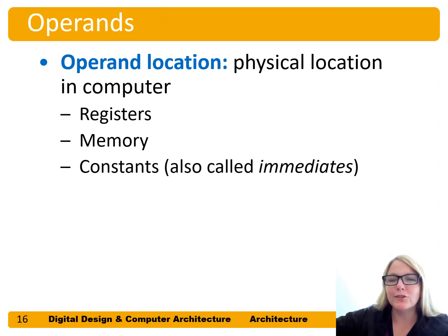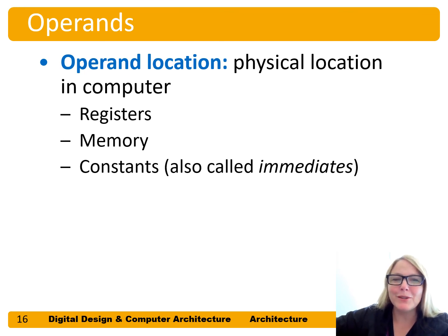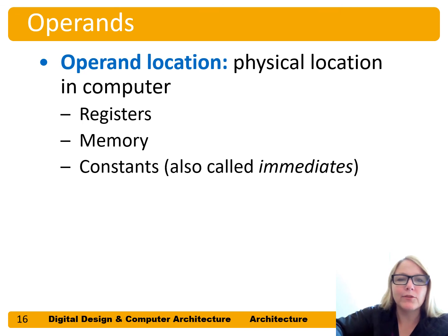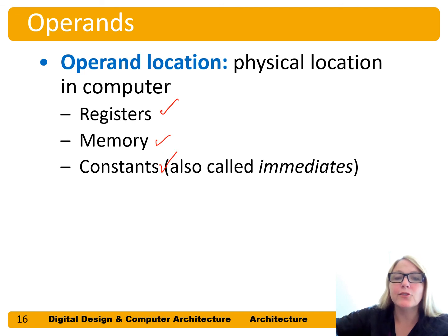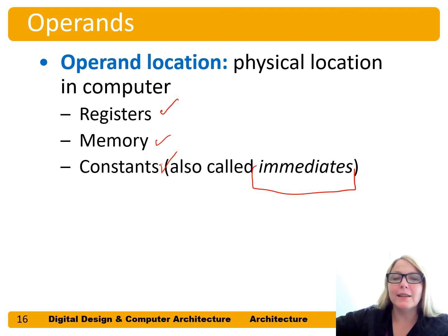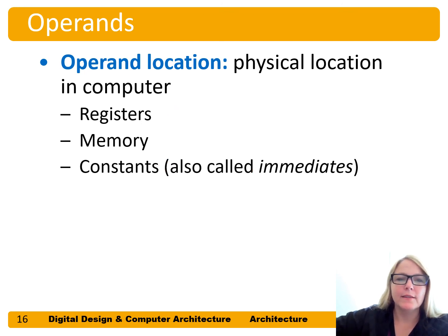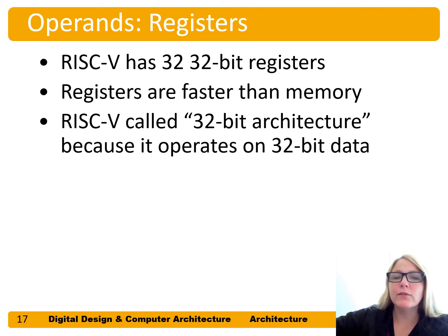What operands do these instructions operate on? There has to be a physical location in the computer, and these three locations are: we get the operands from registers, memory, or from constants that are encoded in the instruction itself. We call these immediates because these constants are immediately available from the instruction.